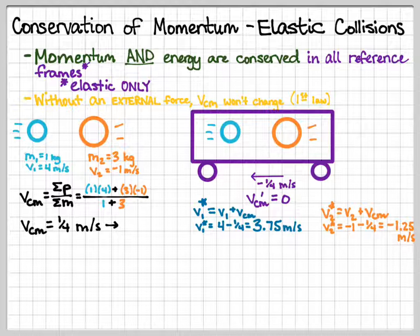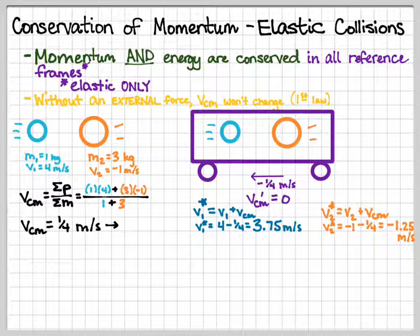You can review that later if you don't understand what I'm doing here. So essentially, to me, on the outside, it seems like the turquoise ball is moving at 3.75 meters per second, and it seems like the orange one is moving to the left at 1.25 meters per second.